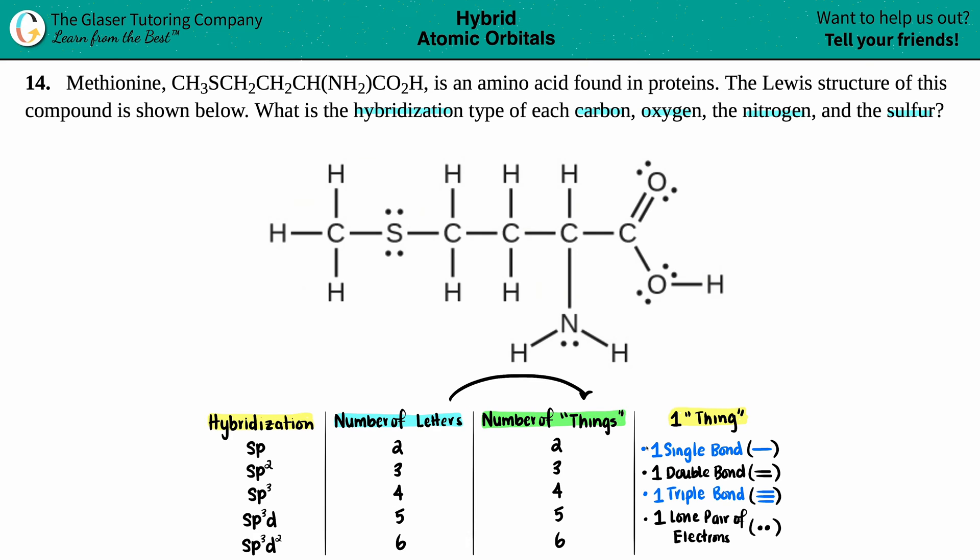The number of letters corresponds to the number of things. If your hybridization has two letters, that means it got two things going around that atom. If it's got three letters, that means three things going around the atom. But what constitutes one thing? One thing is either a single bond. One single bond is one thing. One double bond is one thing, even though there's two lines. The same goes for triple bonds. One lone pair of electrons is classified as one thing.